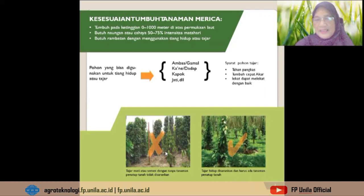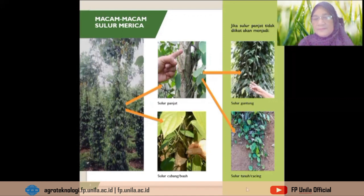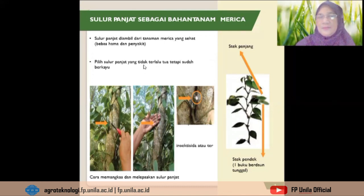Tajar mati atau semen tanpa tanaman penutup tanah tidak disarankan; tajar hidup disarankan dan harus ada tanaman penutup tanah. Macam-macam sulur merica perlu disampaikan karena penyakit busuk pangkal batang pada merica terkait dengan sulur merica ini. Sulur panjat sebagai bahan tanam merica diambil dari tanaman merica yang sehat, yang bebas hama dan penyakit, dan dipilih yang tidak terlalu tua tetapi sudah berkayu.